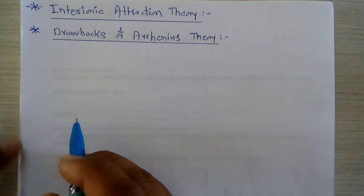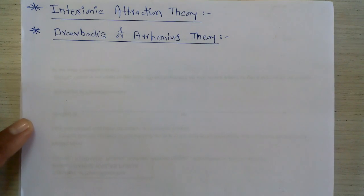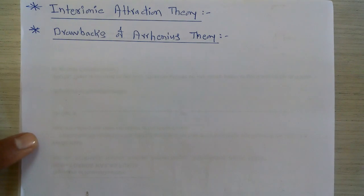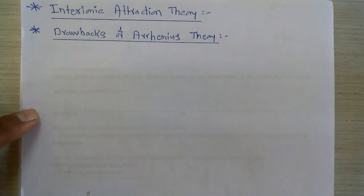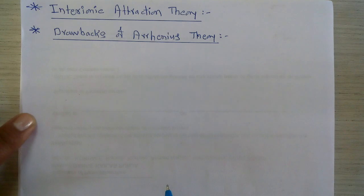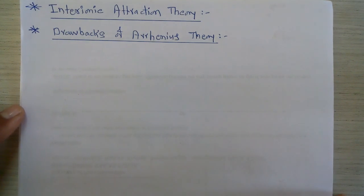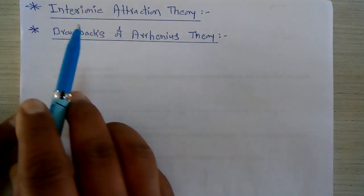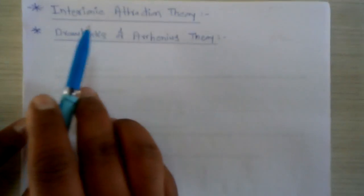Hello, my dear students, I once again welcome you all to this current lecture. In our last lecture, we completed two important methods to determine the transport number of ions in an electrolytic solution: the first method is Hittorf's method and the second method is the moving boundary method. Now, at the concluding section of this chapter, we have to study one important point — the interionic attraction theory — which we are going to study in this current lecture.